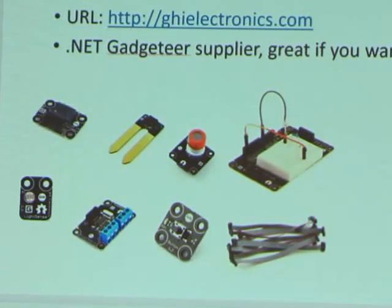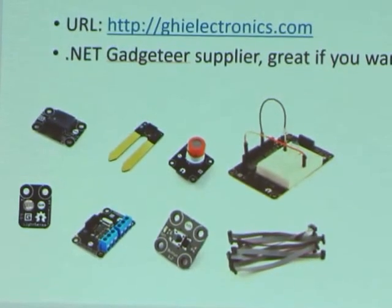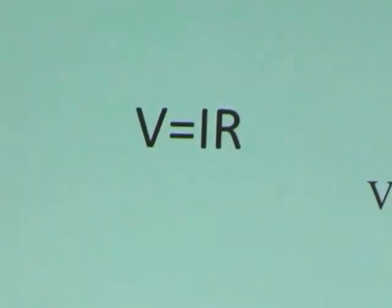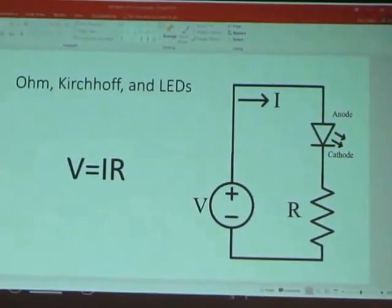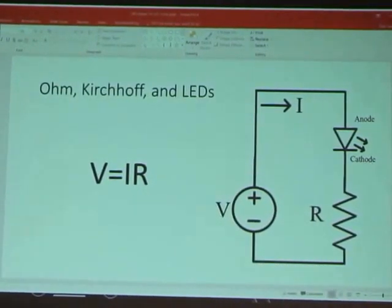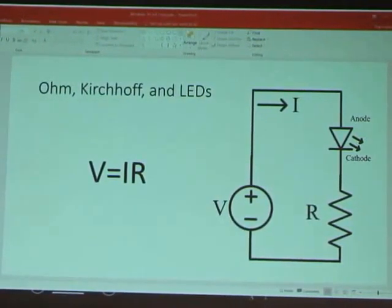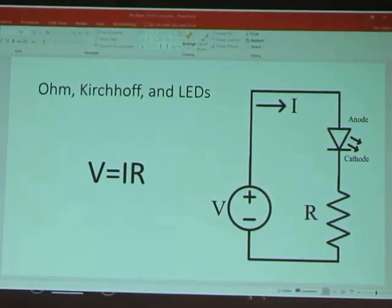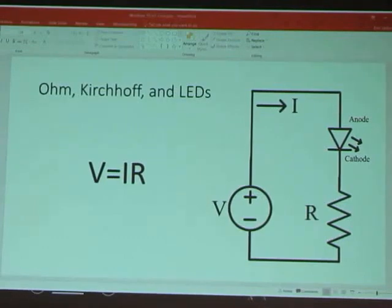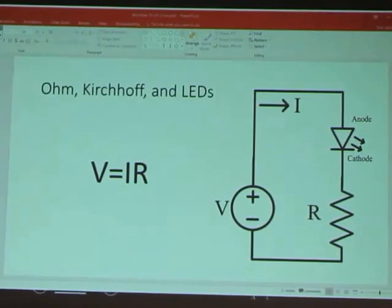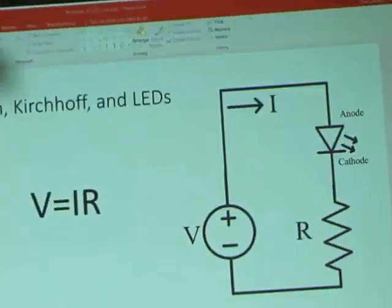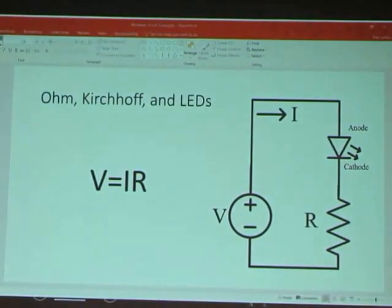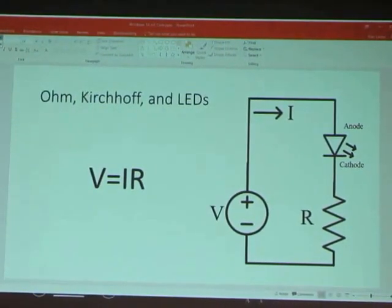Let's do a quick overview of basic electronics — just the minimum you need to know to get started lighting up LEDs. There are two important names: Ohm and Kirchhoff. Kirchhoff has two laws: the Kirchhoff Current Law says the current flowing into a node must equal the current flowing out — conservation of energy.